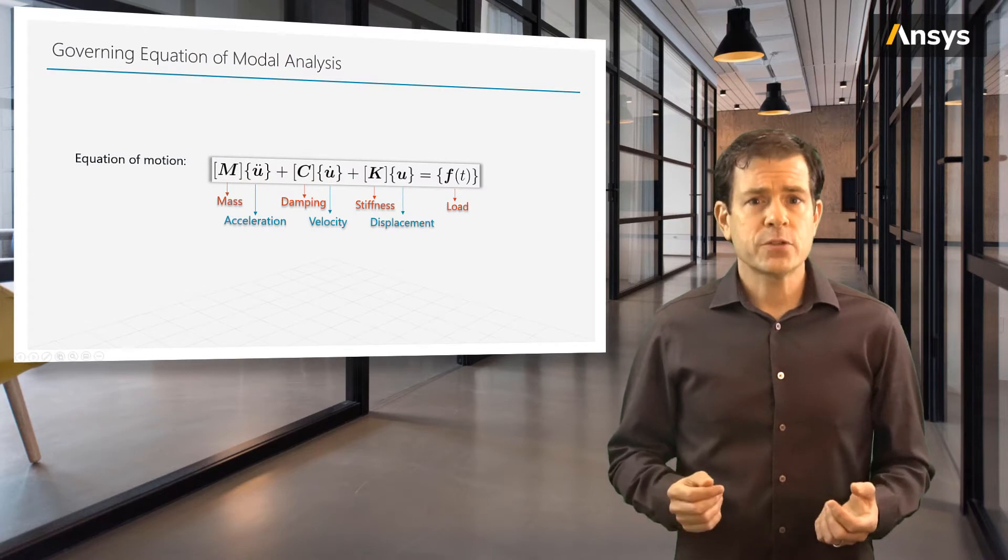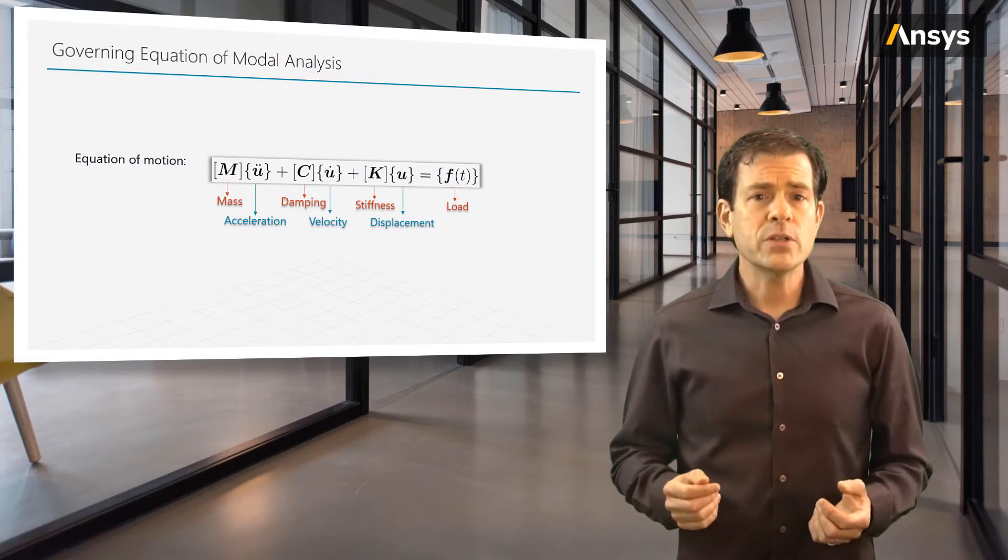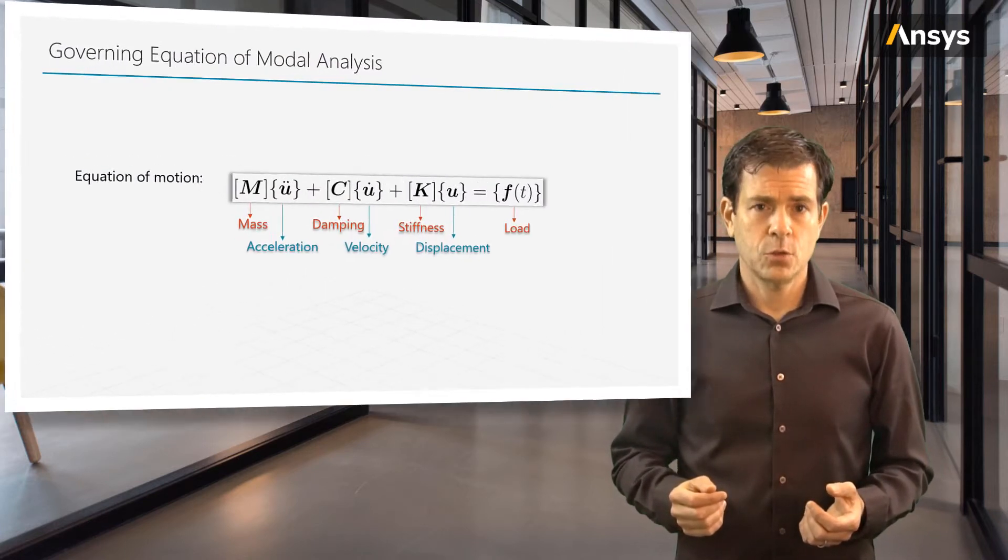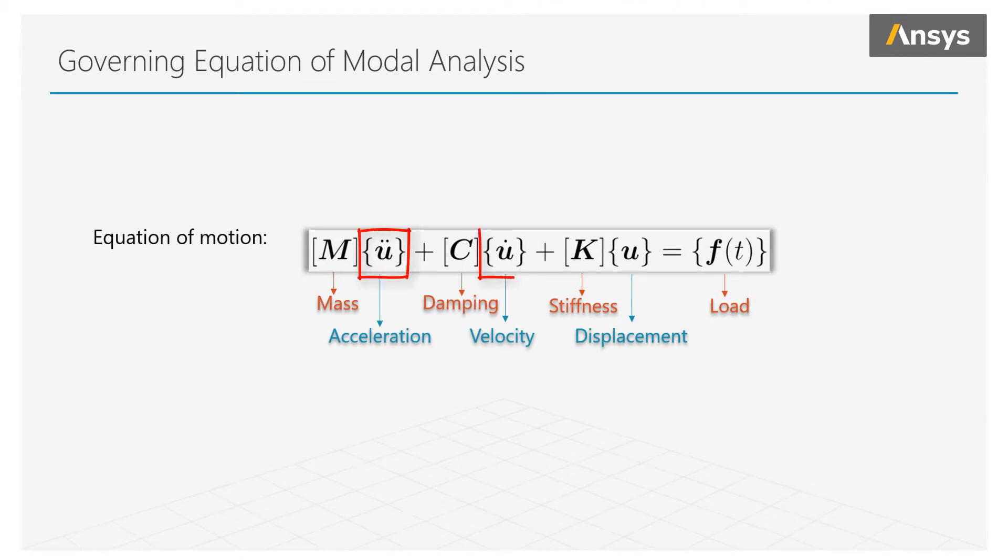For solving a dynamic response of a structure, our basis is always the general equation of motion, where the unknowns are the acceleration, velocity, and displacement for all points over the structure.